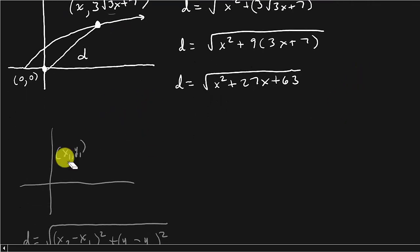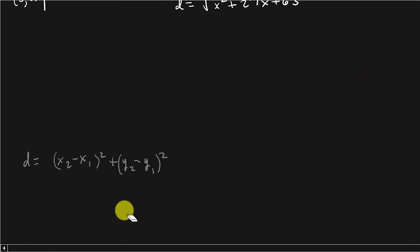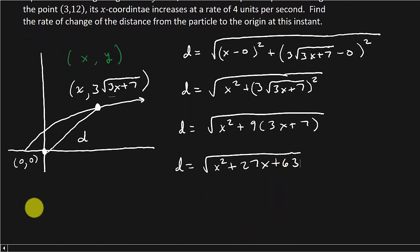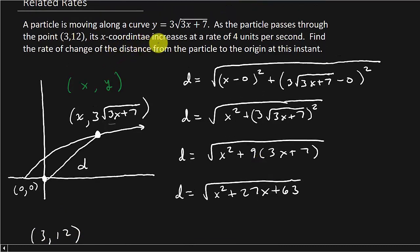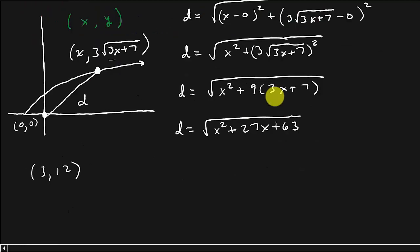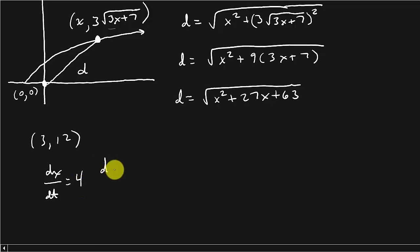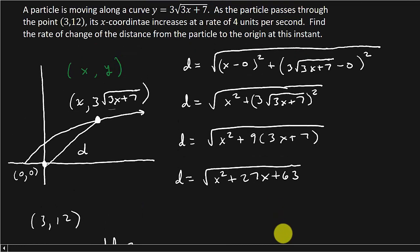Now we need to take the derivative of that with respect to t. Let's write down what we're given: the point (3, 12) is where we evaluate, and the x-coordinate increases at a rate of 4 units per second, so dx/dt equals 4. We're looking for dd/dt — how fast is the distance changing.